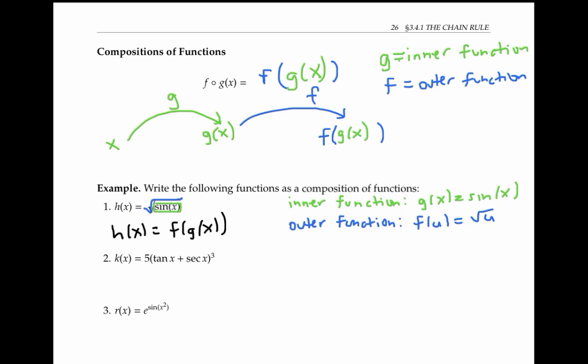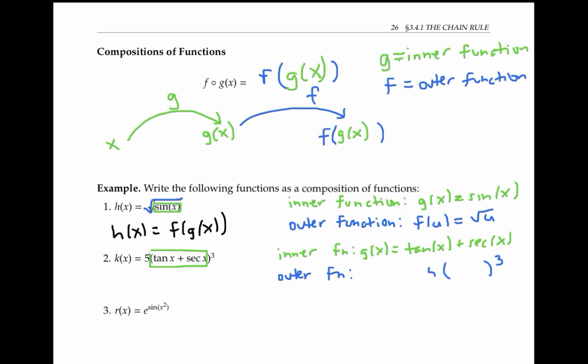Please take a moment to write the next two functions as compositions of functions before you go on. A natural way to write k of x as a composition is to let our inner function be tan of x plus secant of x. The outer function describes what happens to that boxed inner function — it gets cubed and multiplied by five.